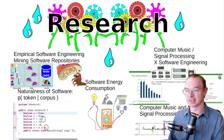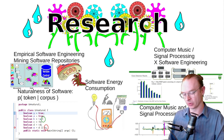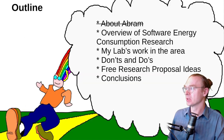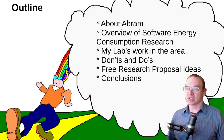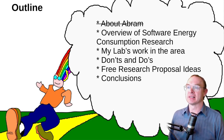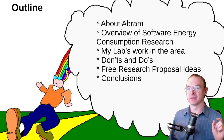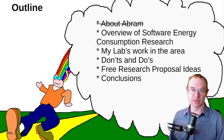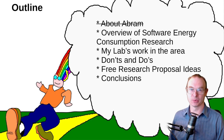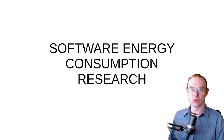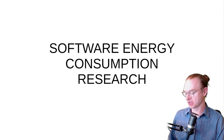I also do a lot of research on the naturalness of software — the application of language models to source code as if it were a natural utterance. But a big part of my empirical software engineering research is software energy consumption: what load, what work software induces and is usually powered by energy. I've also gotten into signal analysis on ECG — machine learning on electrocardiograms for diagnosis and prognosis. This talk will cover software energy consumption research, my lab's work in the area, some do's and don'ts, and a couple of free research proposal ideas at the end.